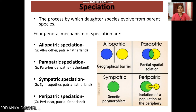Then there is sympatric speciation. In sympatric speciation, as we saw in allopatric with blue and yellow species, the new species arise due to genetic polymorphism within the same land. The parent genotypes are lost, and new genes appear in new individuals, and genetically similar individuals survive together.